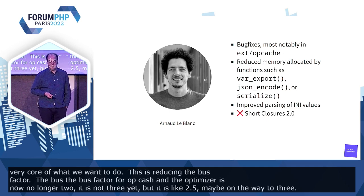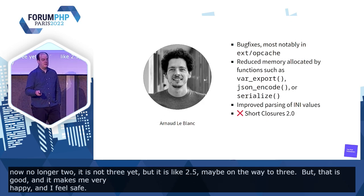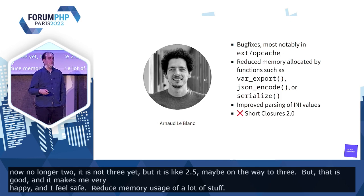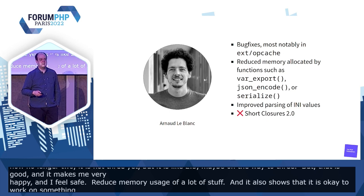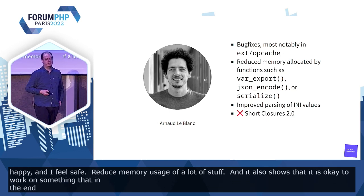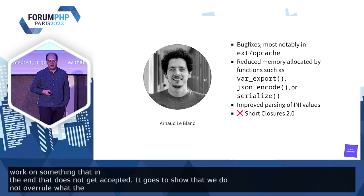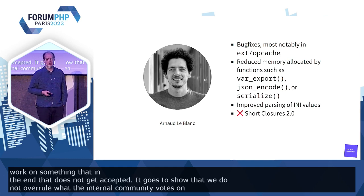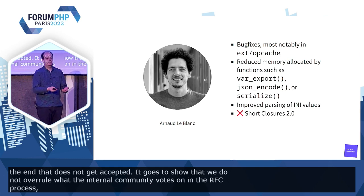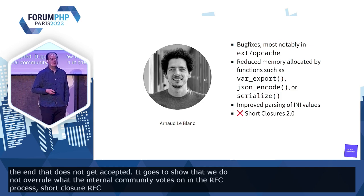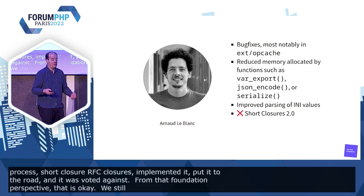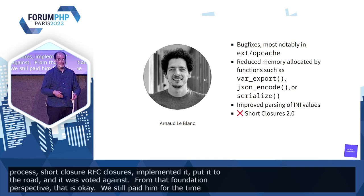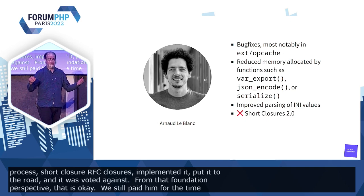It also shows that it's okay to work on something that in the end does not get accepted. It goes to show that we do not overrule what the internals community votes on in the RFC process. Arnaud prepared the short closures RFC, implemented it, put it to the vote, and it was voted against. From the Foundation perspective, that's okay — we still pay him for the time he worked on that. Because why shouldn't we? It's research. We now know, as a community, how we do not want this feature. We learned something. That's good.